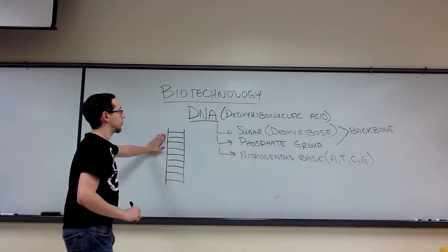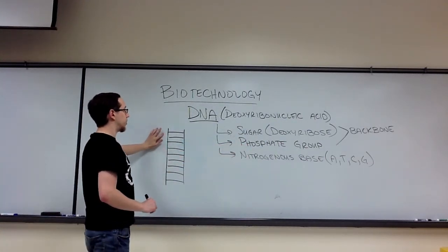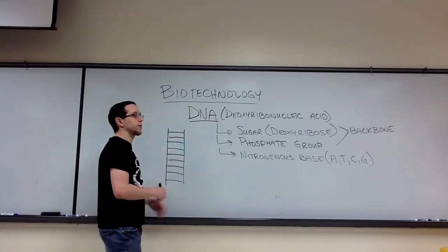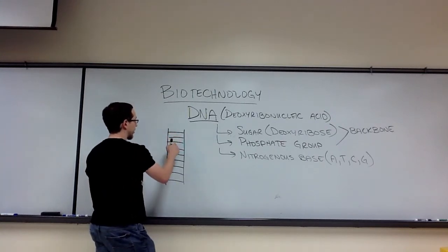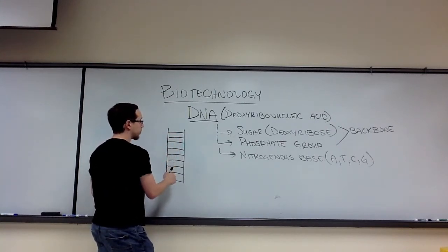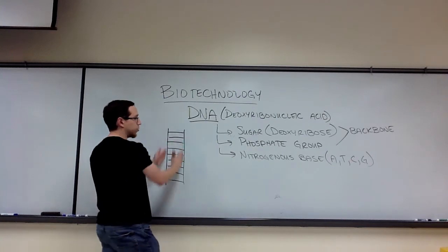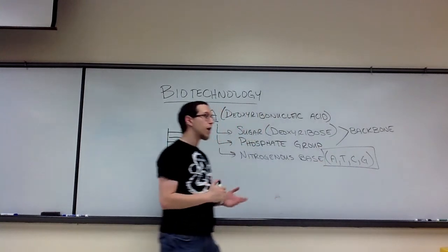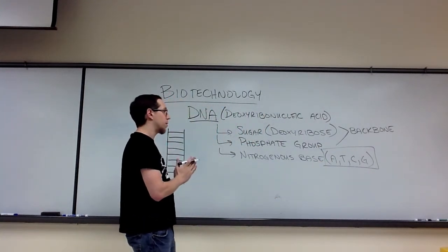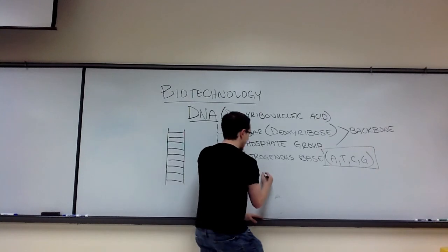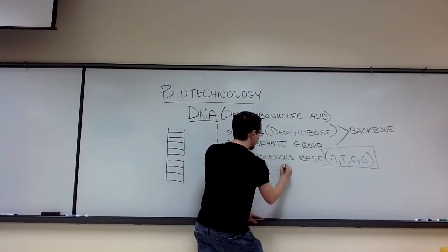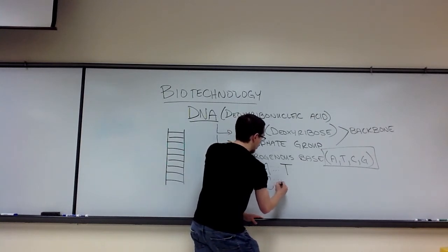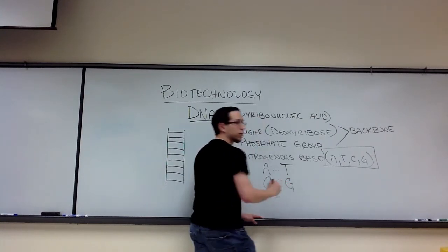So it's going to be composed of deoxyribose bound to a phosphate, bound to a deoxyribose, bound to a phosphate, bound to a deoxyribose, bound to a phosphate, and so on and so forth. The rungs of this ladder represent interactions between the two strands of DNA that occur between these nitrogenous bases. What we'll find is that these nitrogenous bases always pair up in the same way. Adenine always forms two hydrogen bonds with thymine, and cytosine always forms three hydrogen bonds with guanine.